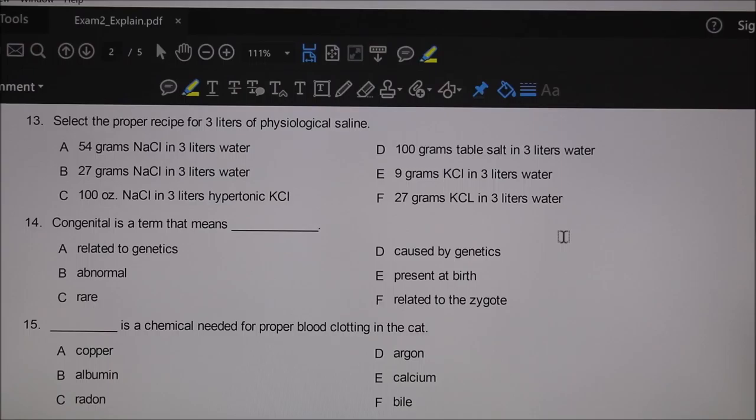Thirteen: select the proper recipe for three liters of physiological saline. We said physiological saline was 0.9 grams of sodium chloride per 100 grams of water. That's 9 grams per liter, so three liters would be 27 grams. Answer B: 27 grams sodium chloride in three liters of water.